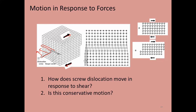For this shear stress to be accommodated, the dislocation itself is actually moving back and to the left. That line is moving, and the lip — the part that's overhanging — is growing bigger and bigger, allowing the macroscopic shear to occur.